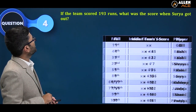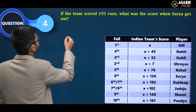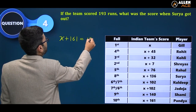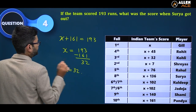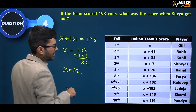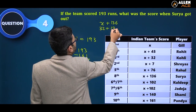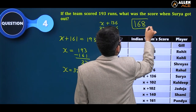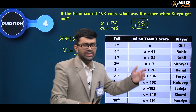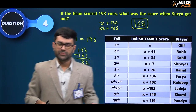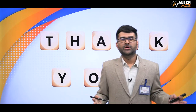Question 3: If the team scored 193 runs total, what was the score when Surya got out? Since Pandya's dismissal (x+161) represents the final score of 193, we get x equals 193 minus 161 equals 32. Surya's dismissal score is x plus 136, so the answer is 32 plus 136 equals 168. Surya got out when the team score was 168.